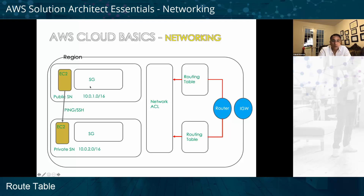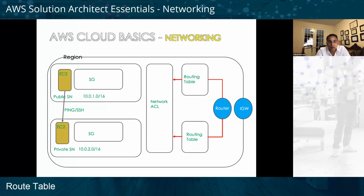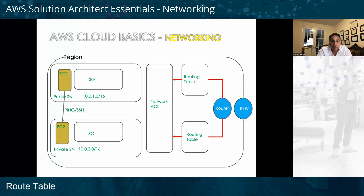The other component is the security group. A security group allows you to add rules specifying which ports, IP address ranges, and protocols are allowed. For example, if you want to allow a specific IP address to SSH into a specific EC2 instance, you define that in the security group. Any machine whose IP address is not defined in the security group will not be allowed to SSH or ping that instance.